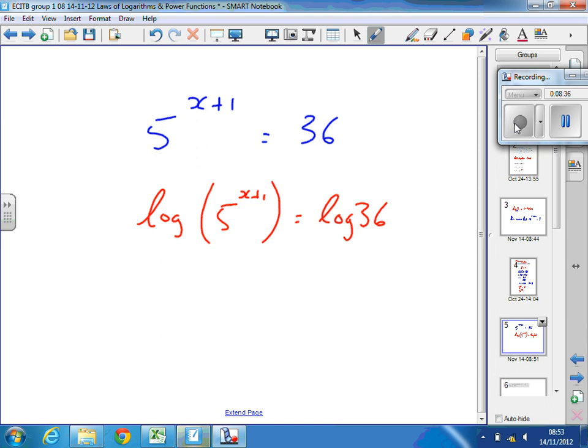Which means we can bring the x plus 1 down and turn that into a multiply. And it's perfectly acceptable to just go straight from that step to that step, because as soon as you've taken the logs of both sides, that means that we can use the law of logarithms and bring that power down. So, we can do two steps in one, almost.